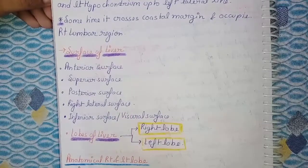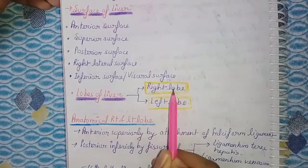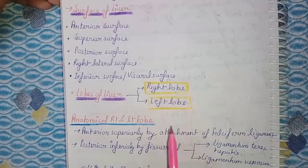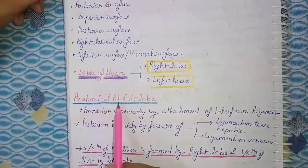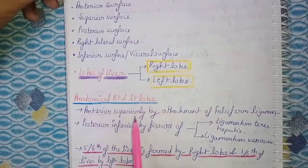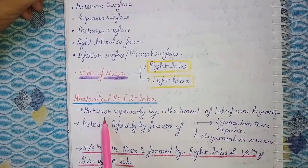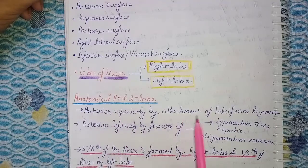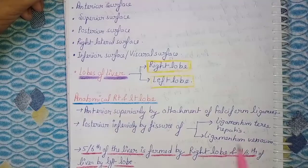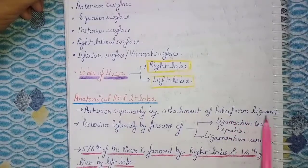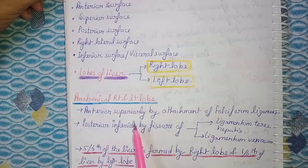The lobes of the liver are the right lobe and left lobe. There are two additional concepts: anatomical right and left lobe, and physiological right and left lobe. The anatomical division is made anteriorly and superiorly by the attachment of the falciform ligament, and posteriorly and inferiorly by the fissure of ligamentum teres hepatis and ligamentum venosum.